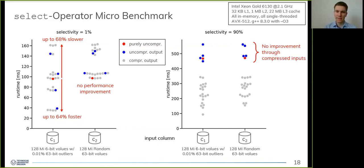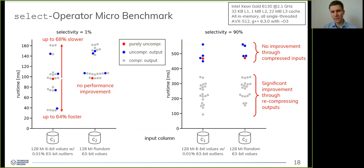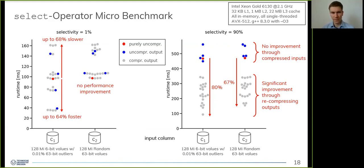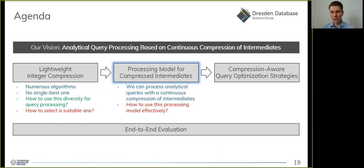However, this picture changes completely when we increase selectivity to 90%. If we only compress the input but not the output, we achieve no or only very slight improvement compared to uncompressed processing. Only if we also compress the output do we achieve significant improvements of 80% and 76% for our two input columns respectively. This is especially crucial since the output of the select operator can only be an intermediate result in the context of a query execution plan. This underlines that we should compress intermediate results in order to obtain maximum performance.